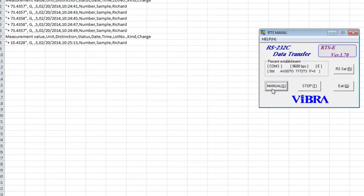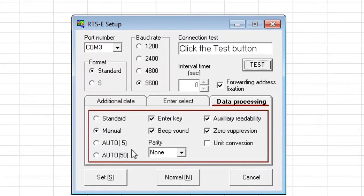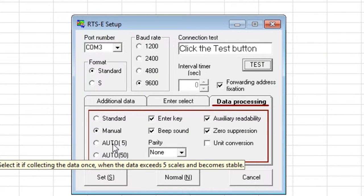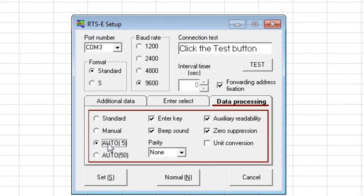Weighing data can be recorded at set intervals, manually, or can be set to automatically record when the balance reaches stability, past a threshold of 5 grams or 50 grams.